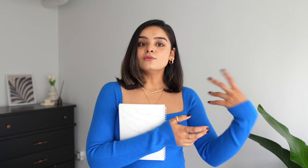It's very important to understand how these subseasons are formed. Winter and summer are cool seasons, but spring and autumn are warm seasons. By cool, I mean if you have cool undertones, you fall in winter or summer. But if you have warm undertones, you fall under autumn or spring. We will talk about how to find your undertones — whether you're cool, warm, or neutral — later on.